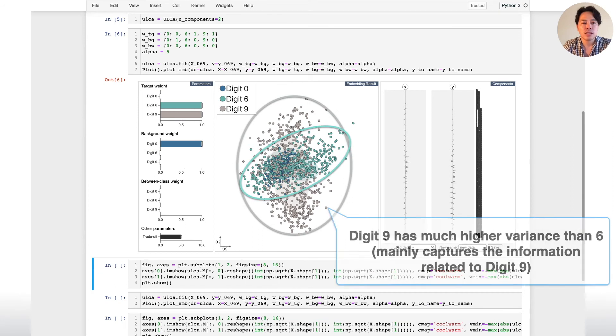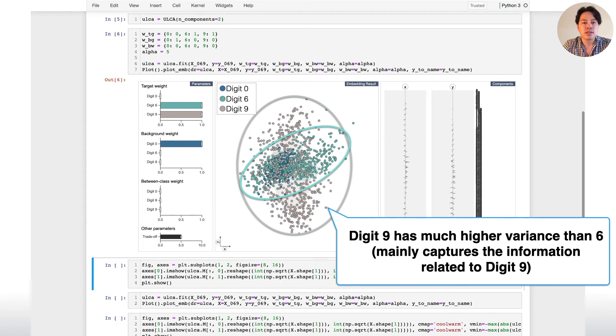But, as you can see here, digit 9 has much higher variance than digit 6 in the result. This indicates this embedding result mainly captures the information related to digit 9.